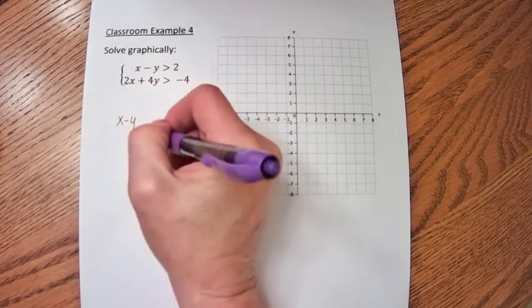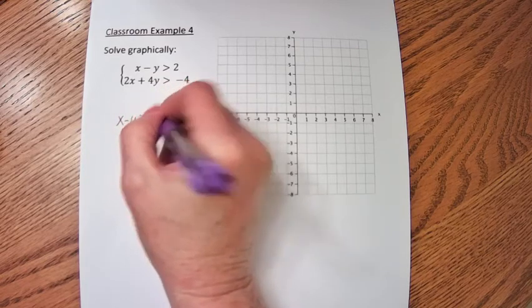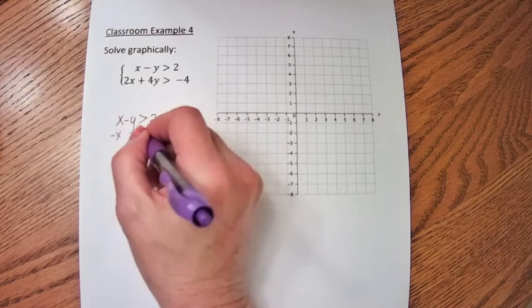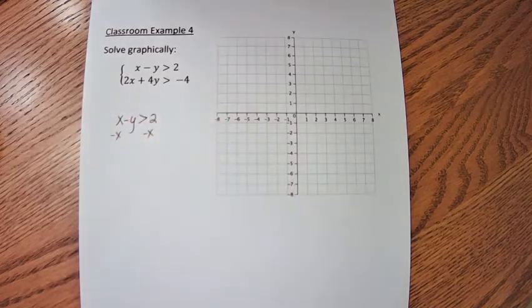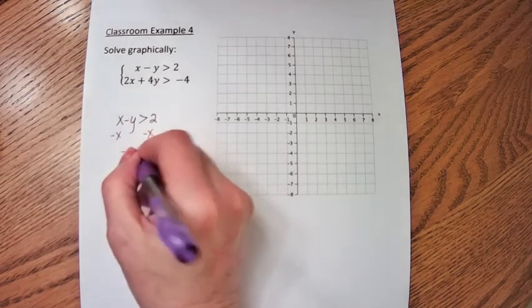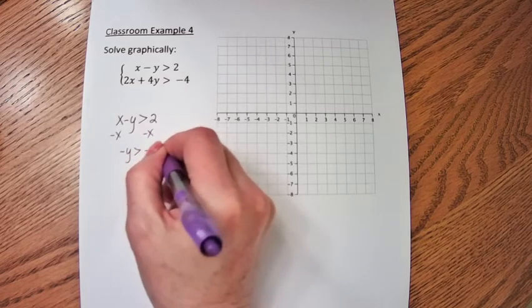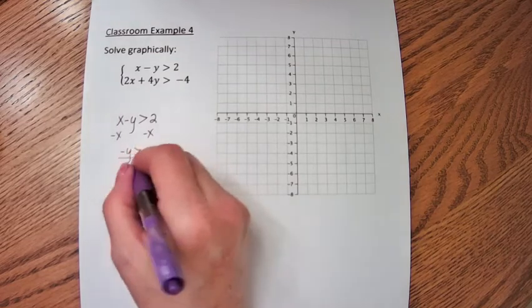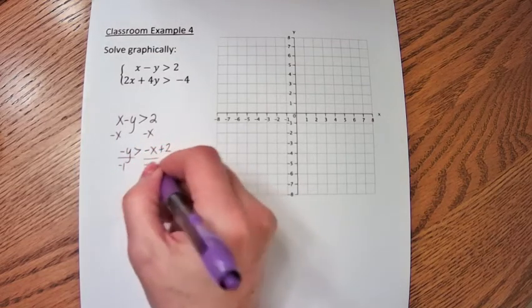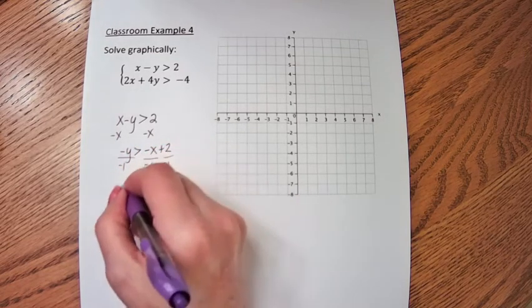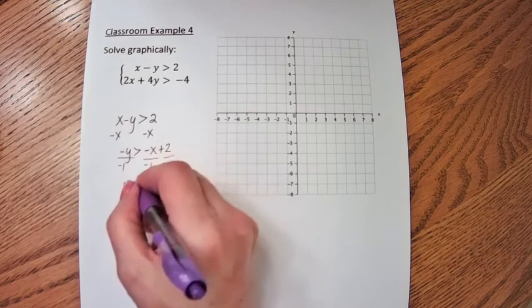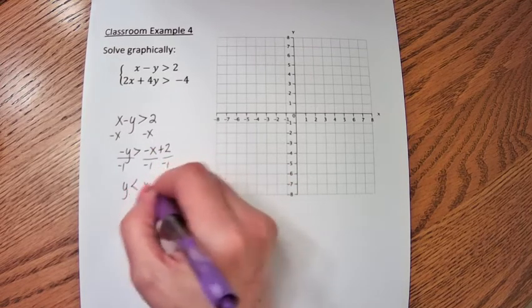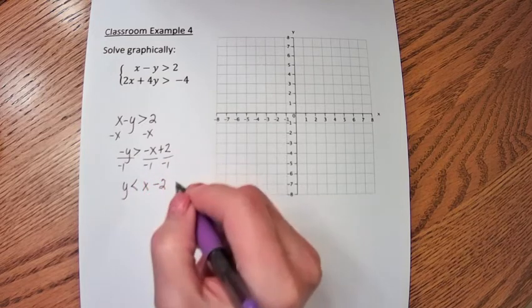Let's graph x minus y is greater than 2. We want to get the y by itself, so we're going to subtract x from both sides. Negative y is greater than negative x plus 2. We don't want a negative y, so we're going to swap the signs. When you divide by a negative, this greater than becomes less than.